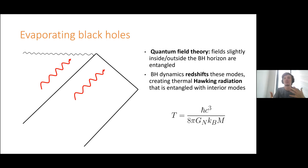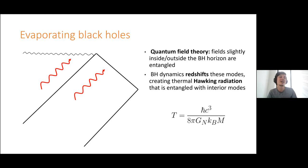Rather than short range entanglement very close to the horizon, we end up with really long range entanglement between modes at asymptotic infinity and stuff inside the black hole. These modes at infinity look like noisy thermal radiation — a thermal mixed state purified by the stuff inside — at a temperature proportional to one over the mass of the black hole. So bigger black holes are actually colder. Astrophysical black holes are like a billionth of a Kelvin or even less — incredibly cold objects — but they do have a non-zero temperature and radiate this Hawking radiation.